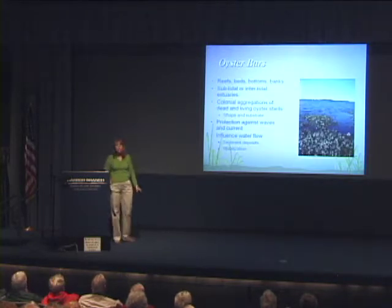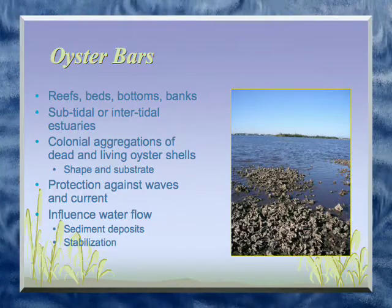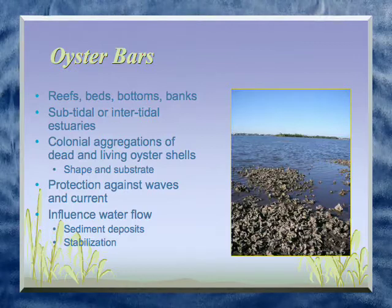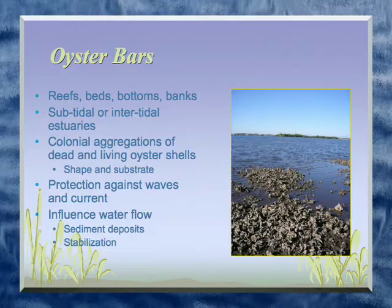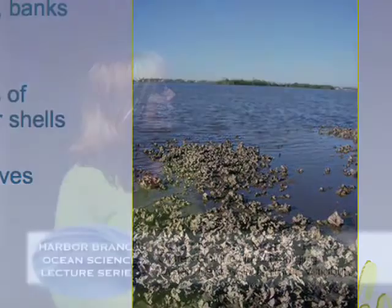An oyster bar is not just the place you go to eat oysters — it's also another name for a reef, bank, or bed, and those are all synonymous depending on where you come from. They're an aggregation of dead and living oyster shells. You can find oysters intertidally — when the tide goes down, you can see them — or subtidally, meaning they're always covered by water. Shape is determined by the substrate they settle on and how densely they're packed together. If they settle on hard shell, they tend to be more round; in mud they tend to be long and narrow.